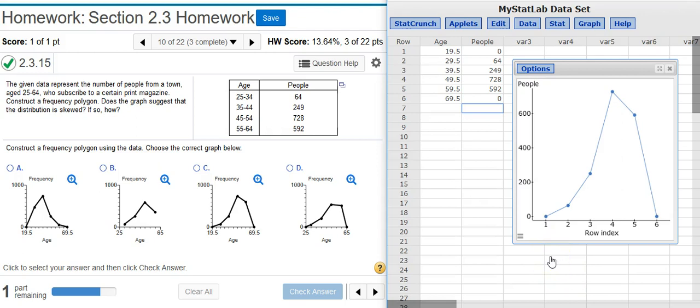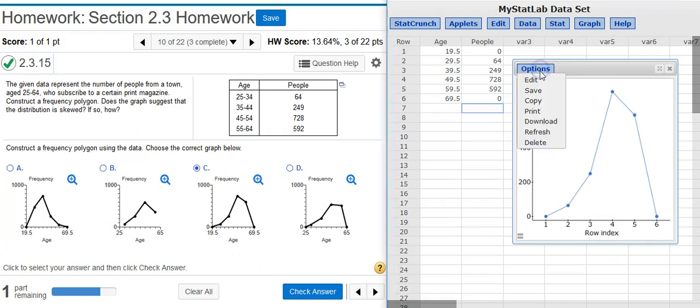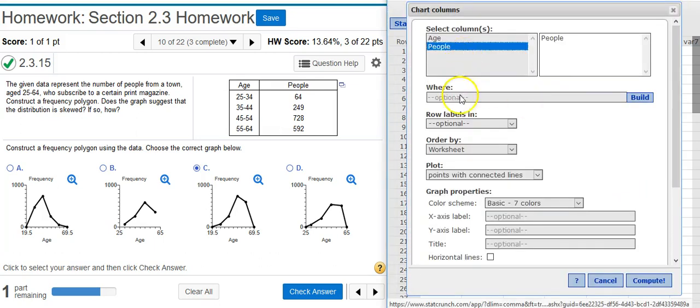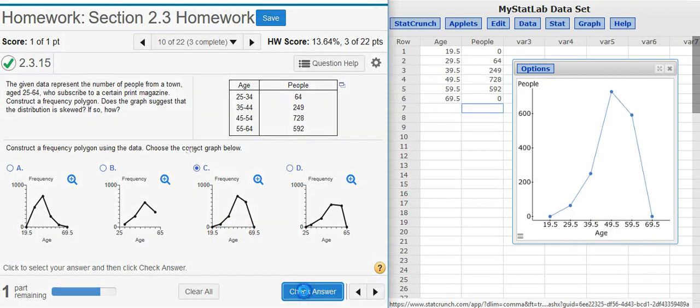And I've got the basic shape for my frequency polygon here, so it's going to match up with answer option C. If I really wanted to get the label on the x-axis correct, I could always go back to my options window and say the row labels are in Age. And now the numbers actually match up with what you see here in your answer option, so I'm going to check my answer. Nice work.